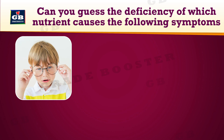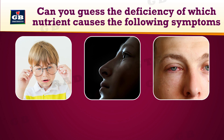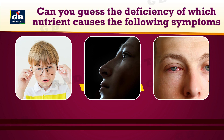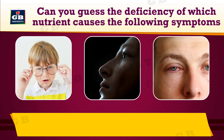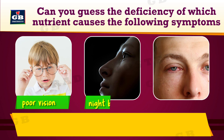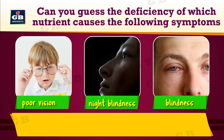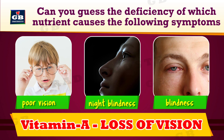Can you guess the deficiency of which nutrient causes the following symptoms? Didn't you get it? I will give you some clues: poor vision, night blindness, blindness. It is vitamin A. Deficiency of vitamin A leads to the loss of vision.